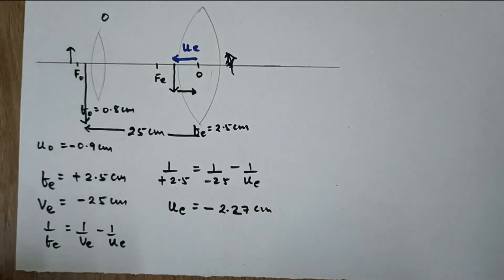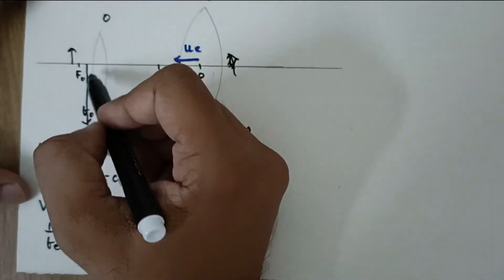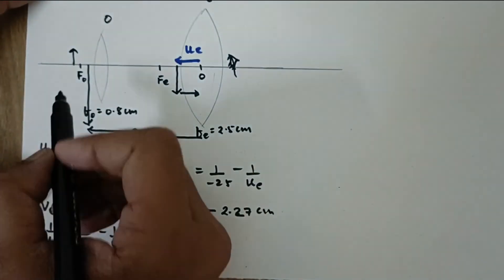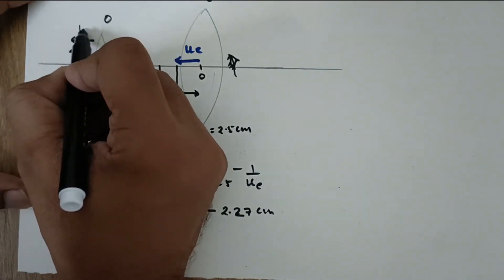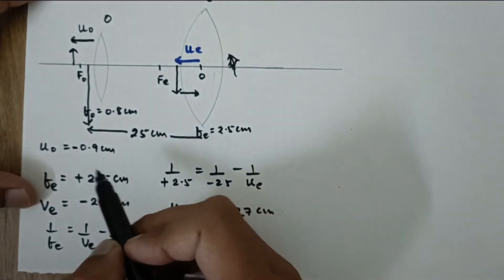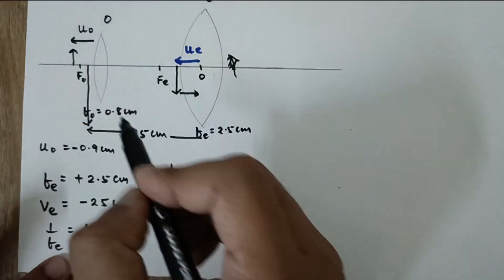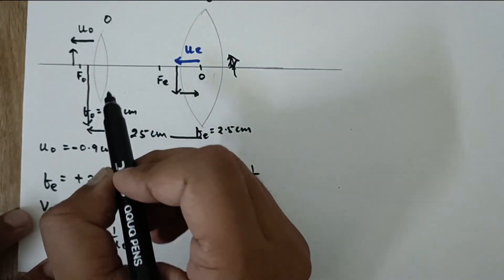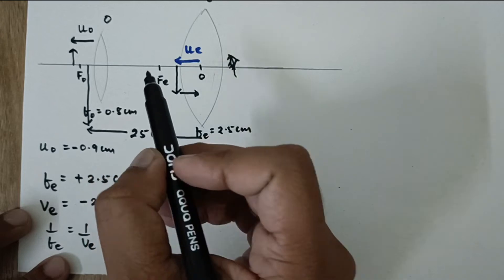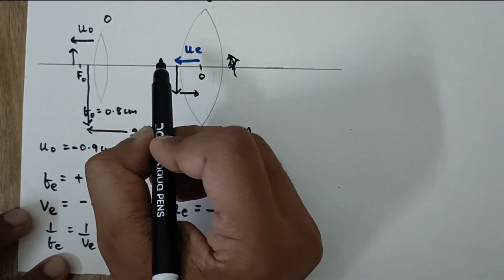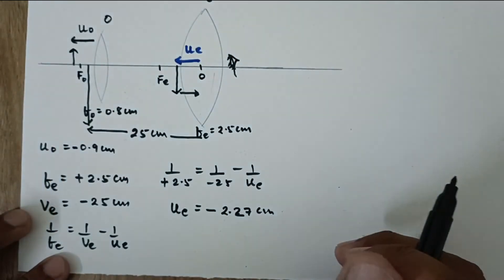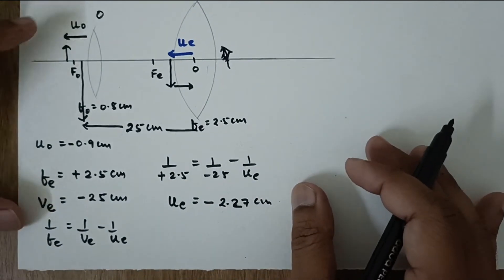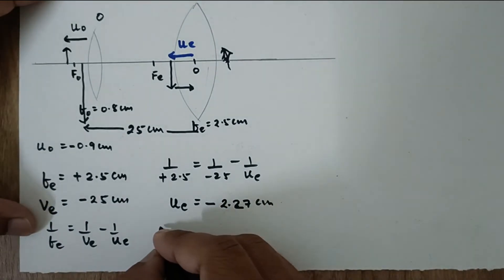For that, the object distance for this particular lens is already given. Now this distance is UO. Now this UO in the question is already given. So let us place the value of UO and FO and let us find out VO. And then that VO plus UE would be the distance between both the lenses.